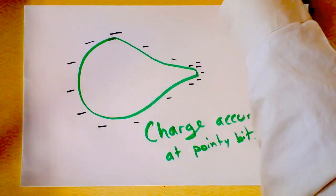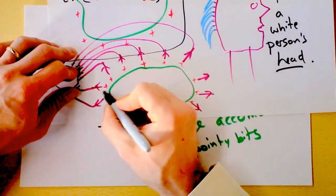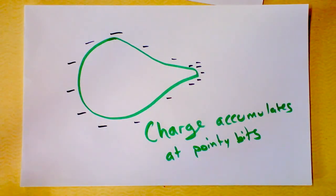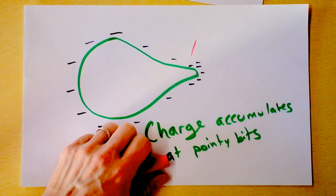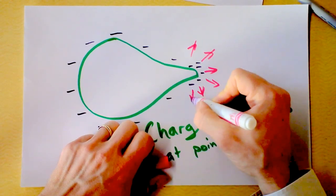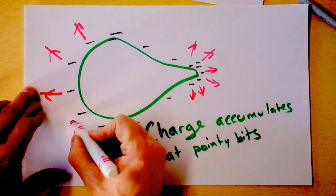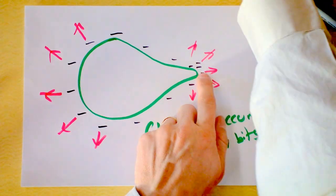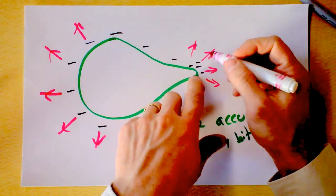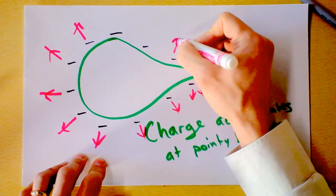Based on rule number three — the white person hair rule — you've got electric fields normal to the surface. The cool thing about a point is that the direction of normal changes really dramatically in a short distance. Here's the normal direction, then the normal direction, then the normal direction, and so on. The normal direction is changing dramatically at the point, but over here on the flat part it's not changing very much. So in order to keep the electric field normal to the surface, you need to have lots of charges at the point.